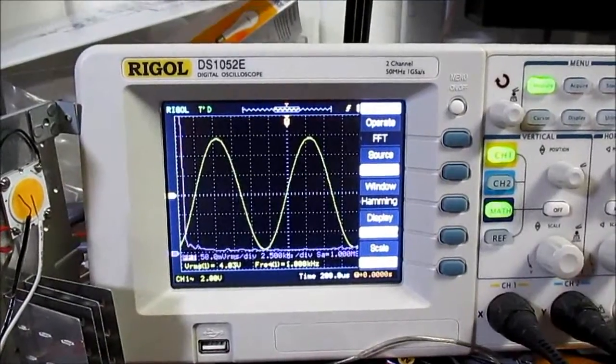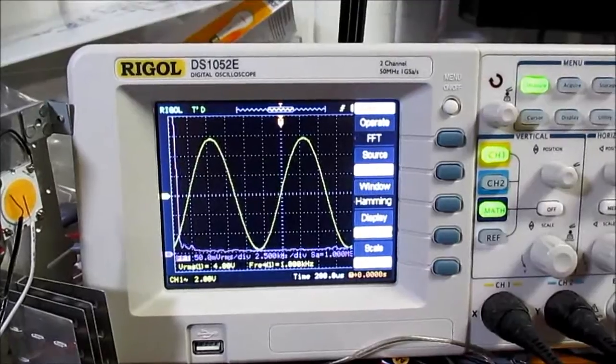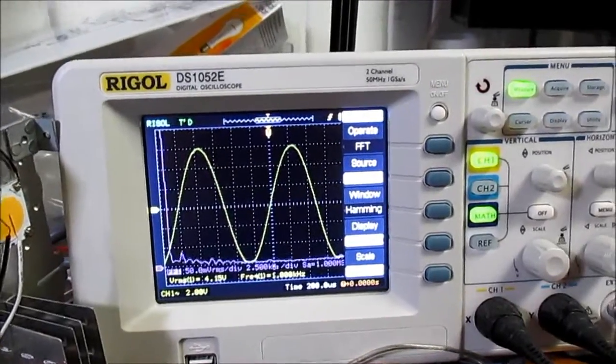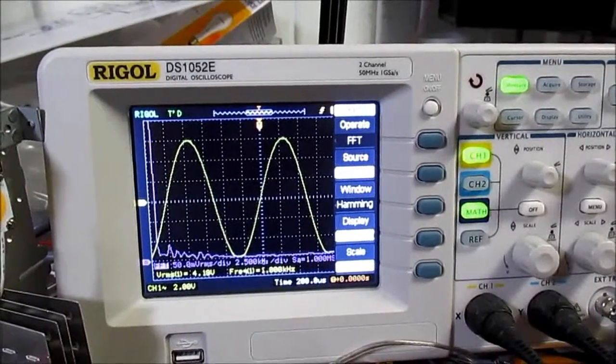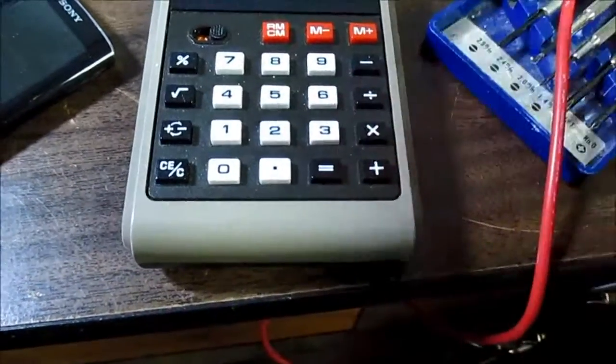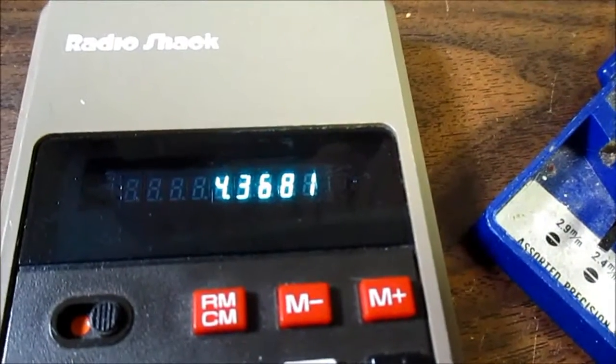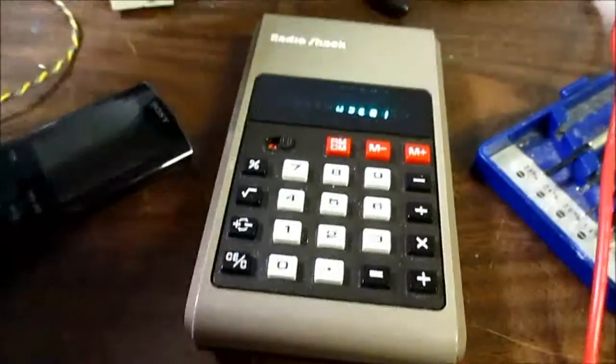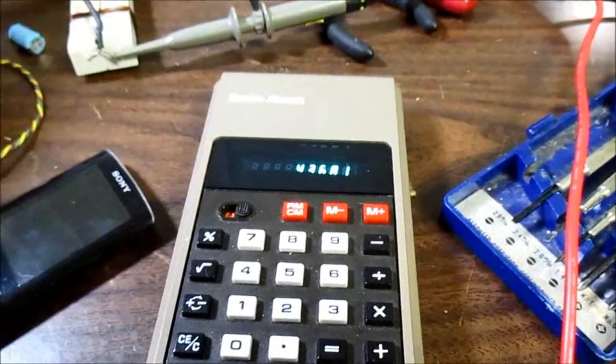I'd say that's pretty good. 4.18. Okay. So punch 4.18 in. Square it. Divided the load resistance, 4 ohms. And we're putting out 4.36 watts. That's about what I expect of clean power.